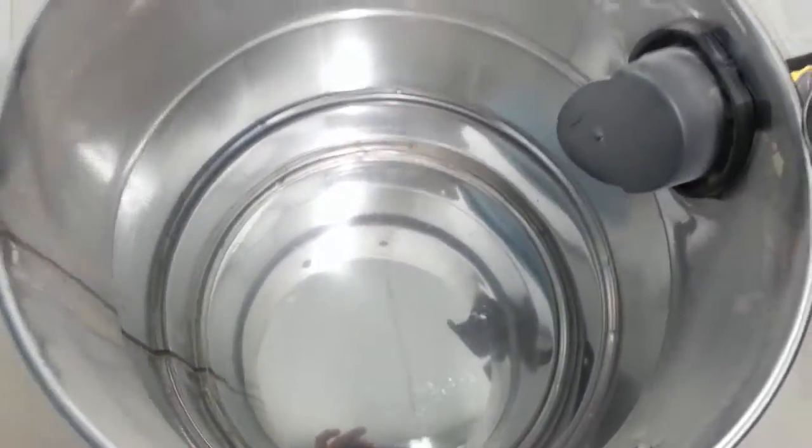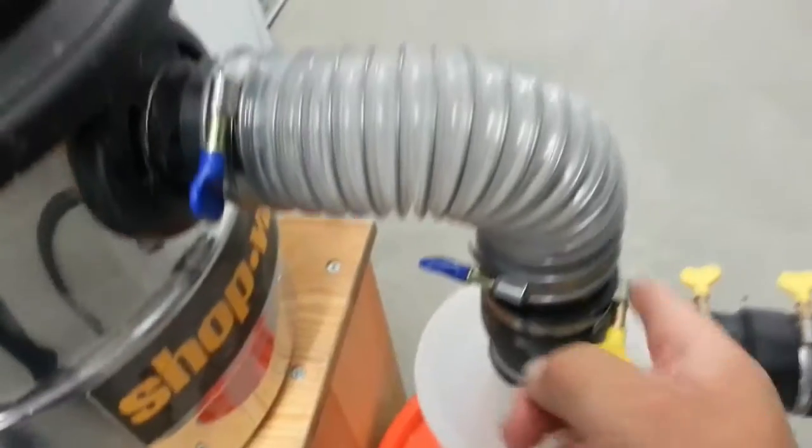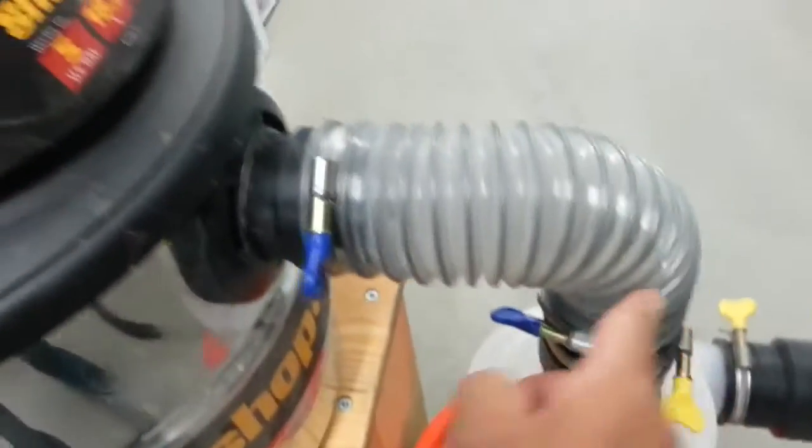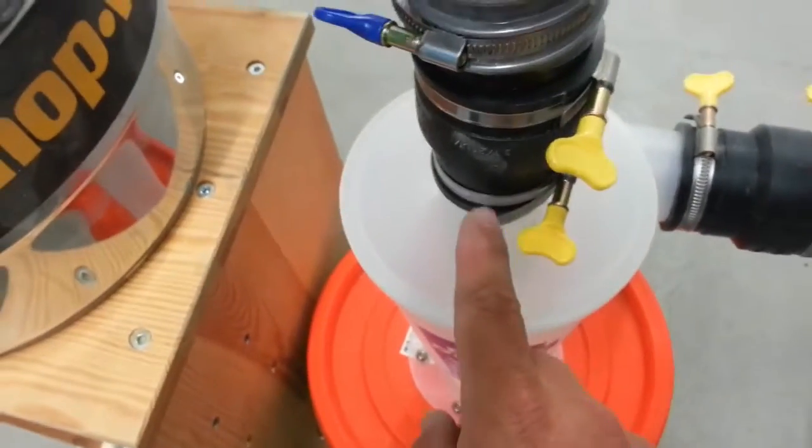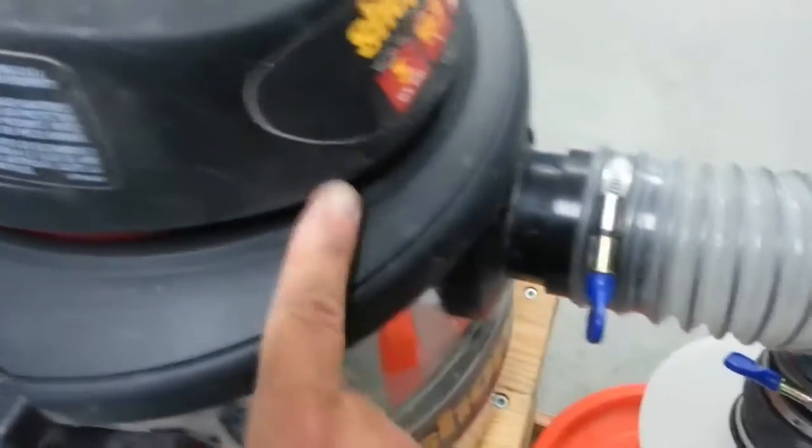That means none of the dust, none of the dust went here, only air. The vacuum provides a suction, it sucks air. This device separates the dust from the air. So this is pure air going in here because none of the dust ended up here.